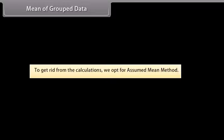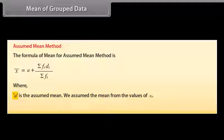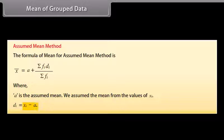Mean of grouped data — assumed mean method. Sometimes the product of Xi and Fi becomes too large, making this method quite time consuming. To simplify calculations, we opt for the assumed mean method. The formula for mean using assumed mean method is: assumed mean plus summation of the product of Fi and Di, divided by summation of Fi, where A is the assumed mean assumed from the values of Xi, and Di equals Xi minus A.